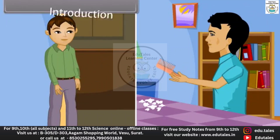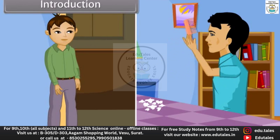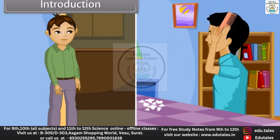Introduction. Amit and Sanjay are planning to purchase some articles from the market. For this, Sanjay is ready and waiting for Amit.